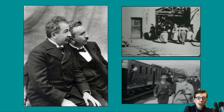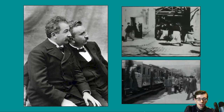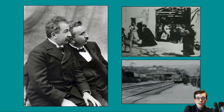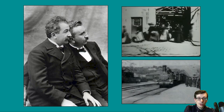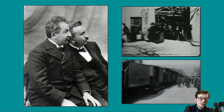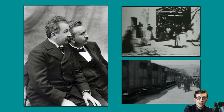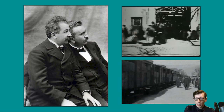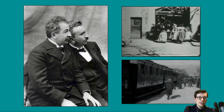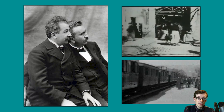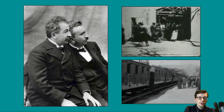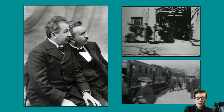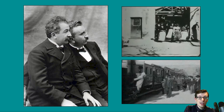The Lumière brothers developed a number of innovations in motion picture technology. After their father had seen one of Edison's kinetoscopes at an exhibition in Paris and described the device to his two sons, the brothers set out to invent new technologies that would overcome the limitations of that device — chiefly its size and the fact that it was a single-viewer experience. In 1895, the brothers created what they called a cinematograph, a device that was a combination of a motion picture camera, printer, and projector. They used this device to create a number of short films. The first was entitled Workers Leaving the Lumière Factory — a 46-second film, which you can see at the top right — shown at the first commercial public screening of films.